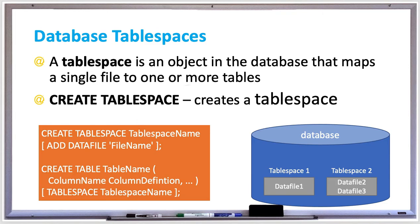When you delete or drop a table, the tablespace is also deleted. If you had a tablespace with several tables, then all those tables need to be deleted for the file to also be deleted. When updating tables, storing one table per file minimizes fragmentation and optimizes table scans. Fragmentation is when blocks become scattered, slowing down queries because more tracks need to be read.